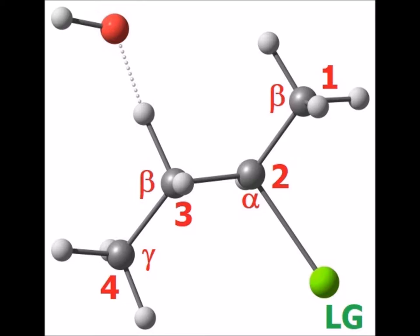Next, we have the computed transition state if the base abstracts the beta hydrogen attached now to the third carbon, as opposed to the first carbon.